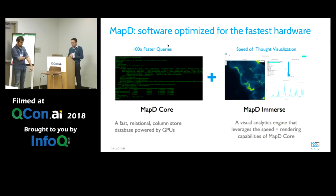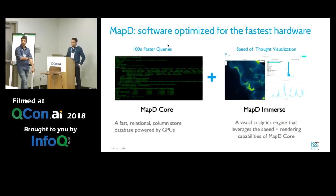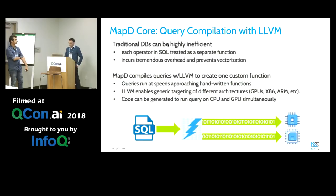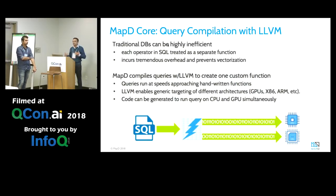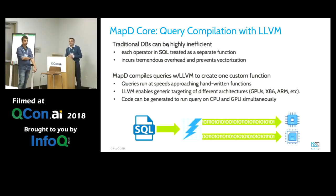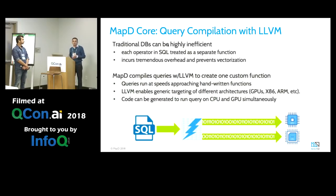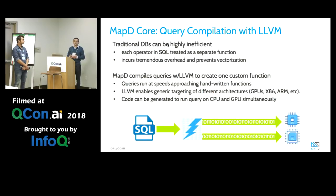There are a number of optimizations that we do. We have the Core, which is the database, and then we have Immerse, which is the UI. The main intent of MAPD is that when you have a lot of data — we're talking about billion-row datasets — you can analyze it visually in real time. We've optimized SQL operations like filtering, which uses the WHERE operation, and segmentation, which uses the GROUP BY operation.